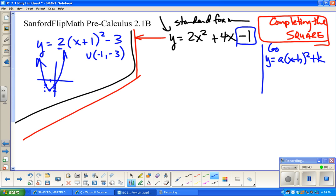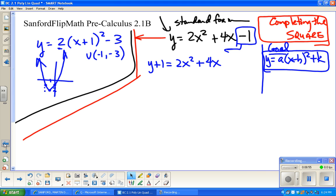This is the goal. I want it to look like this when I'm done. I'm going to get this negative one out of the way by adding one to both sides. Really, all I'm doing is getting it out of the way.